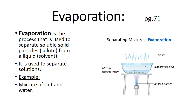Filtration and decantation methods are used only when there are two substances that are not soluble in each other — when the solute is insoluble, like sand and water. If you have a mixture of something like sand and water, or oil and water, we use filtration and decantation. But when you have something that dissolves in water — like sugar, food color, or salt — then you use evaporation.